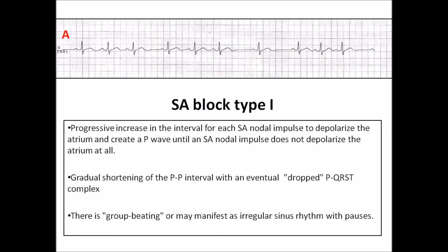In this strip, there is group beating and shortening of the PP interval, and then a dropped P-QRST. There is no evidence of P-QRST complex on all the leads that can explain the sudden bradycardia.